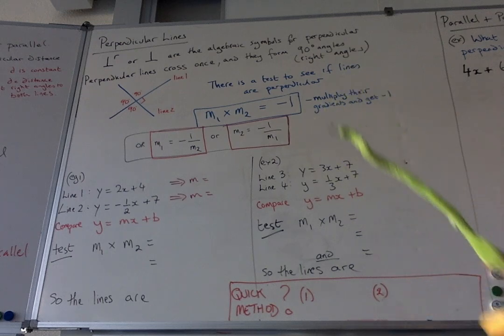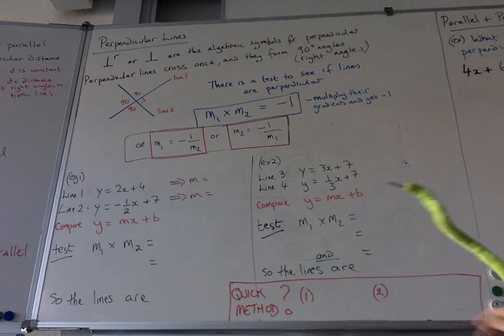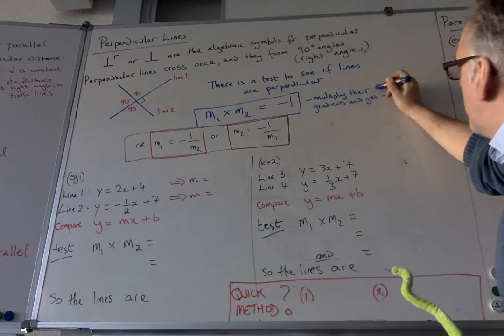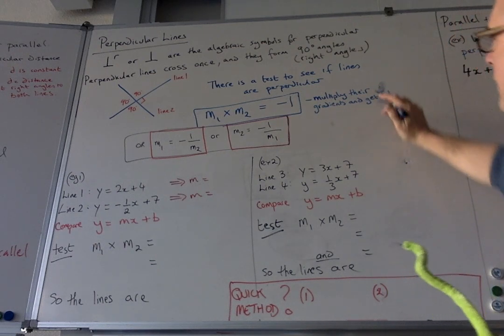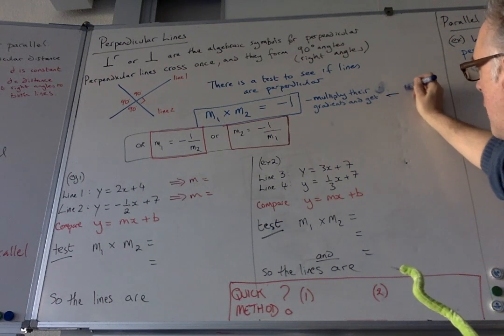But there is a test to see if lines are perpendicular if you know the slope numbers. You multiply their gradients and you get, I'm going to write that a bit bigger, minus one.